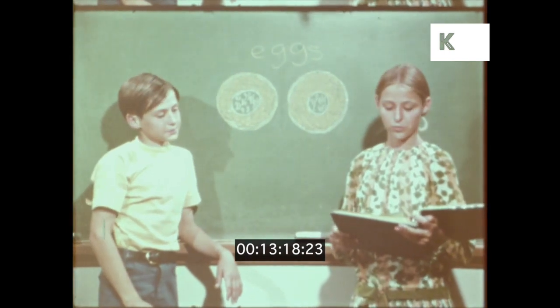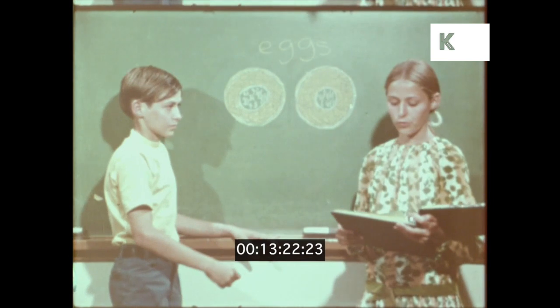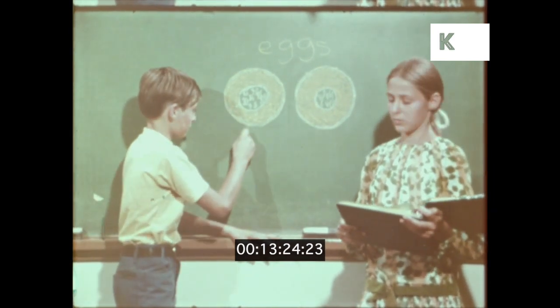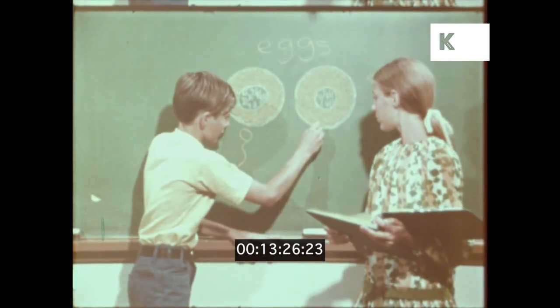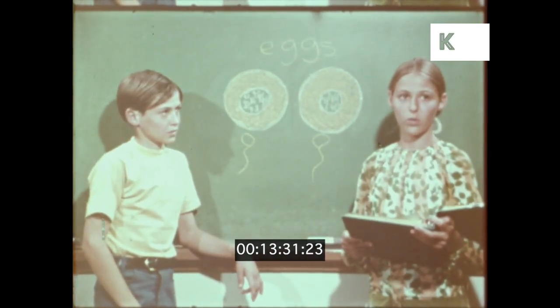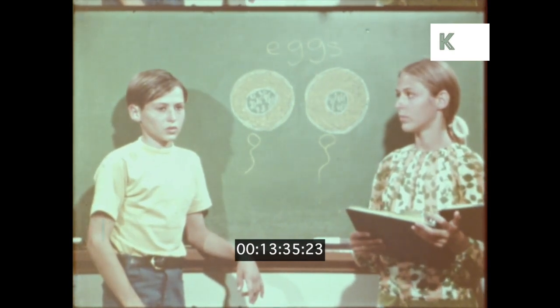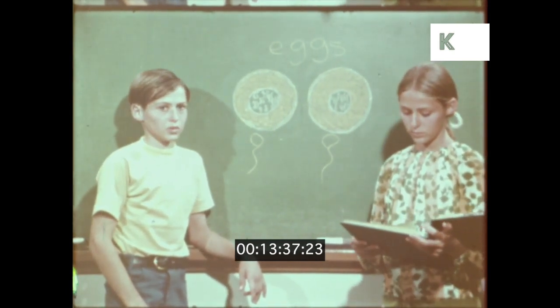We are twins too, but we are fraternal twins. We grew from two egg cells fertilized by two different sperm cells. We are two egg twins, while identical twins are one egg twins. Two egg twins can be either sex: two boys, two girls, or girl and boy like Susan and me.